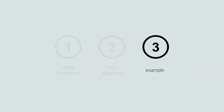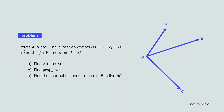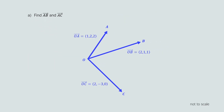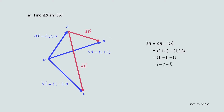Finally, let's go through an example problem. Points A, B, and C have position vectors: OA equals i plus 2j plus 2k, OB equals 2i plus j plus k, and OC equals 2i minus 3j. We can rewrite each of these vectors using bracket notation. For part (a), find vectors AB and AC. Vector AB equals OB minus OA, which is (2, 1, 1) minus (1, 2, 2). Subtracting the i, j, and k components separately gives AB equals (1, -1, -1), which is equivalent to i minus j minus k.